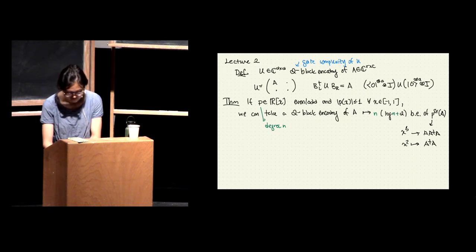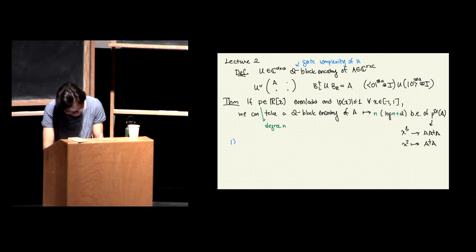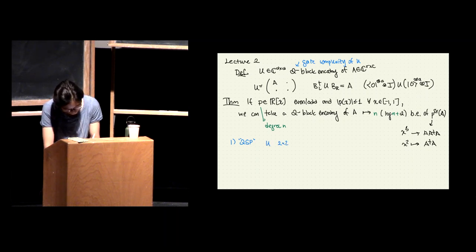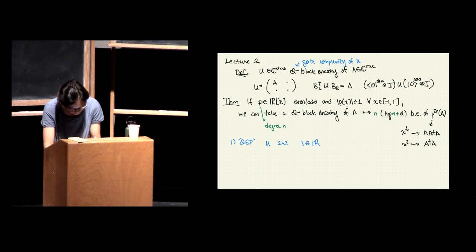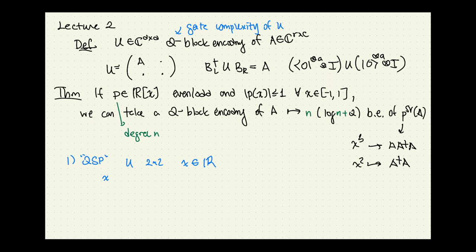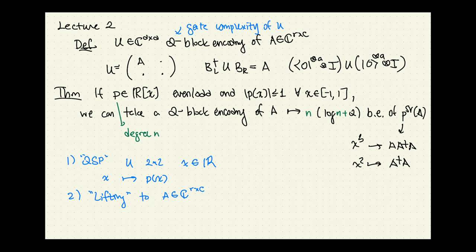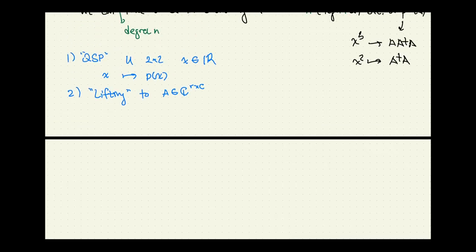How this is going to work: first I'm going to consider quantum signal processing, which is basically if you're looking at a unitary that's two-by-two and it's block encoding something that is just a real number — I'll call it x. I'll show how you can get something with x in the top left to something with P(x) in the top left. Then there will be some lifting to get this to work for arbitrary matrices.